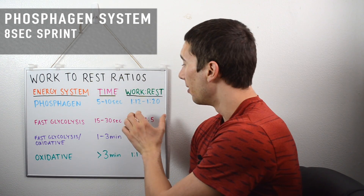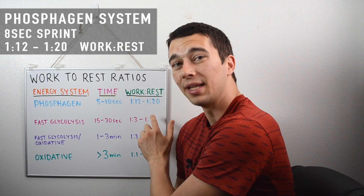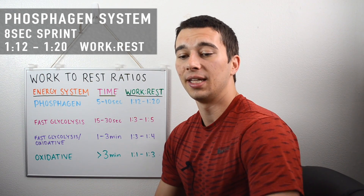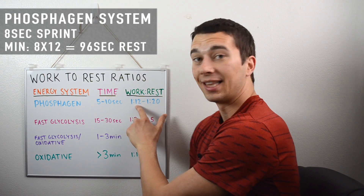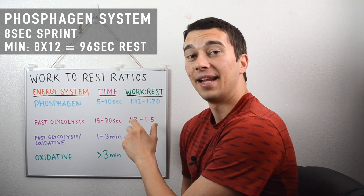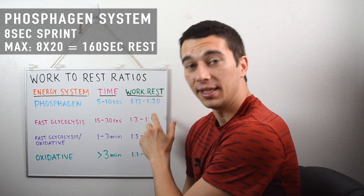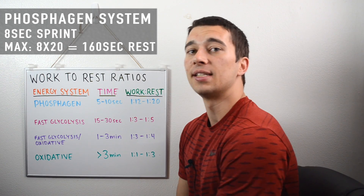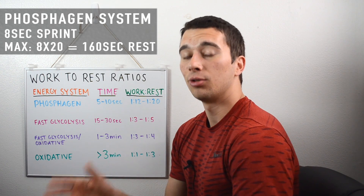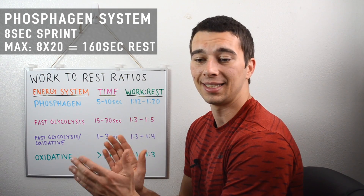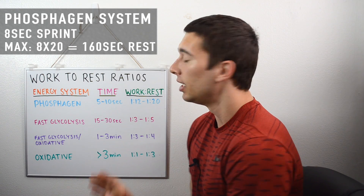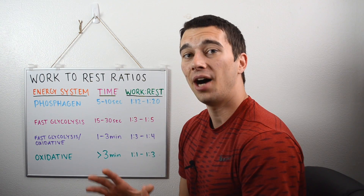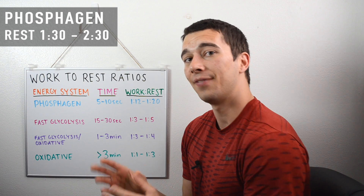Based on the NSCA's guidelines, we want to use a 1:12 to 1:20 work-to-rest ratio for sprints lasting in that 5 to 10 second range. To calculate that: 8 seconds times 12 gives us 96 seconds of rest at the minimum, and 8 seconds times 20 gives us 160 seconds of rest at the maximum. So if asked what the optimal rest is for an 8-second sprint — two minutes, three minutes, or four minutes — we'd say two minutes, because that falls between 96 and 160 seconds. The phosphagen system work-to-rest ratio is 1:12 to 1:20, with optimal rest around a minute and a half to two and a half minutes.